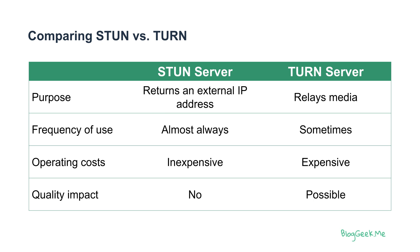If we compare STUN to TURN, the purpose is slightly different. With STUN we're trying to get the public IP address, and with TURN we're trying to relay the media. We try to use STUN servers almost always, and TURN servers only sometimes when we must. Operating costs of STUN are so inexpensive that you can find public ones for free. TURN servers are a lot more expensive, especially at scale. There's no quality impact with STUN, and there might be a quality impact with TURN, depending on how you deploy it.